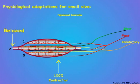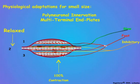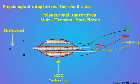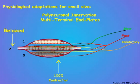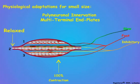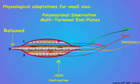Polyneuronal innervation of single muscle fibers and multi-terminal end plates over the surface of the muscle fiber are adaptations to small size that allow small arthropod animals such as insects to compensate for having fewer muscle fibers than are found in the larger vertebrate muscles. In this way, arthropods minimize the number of neurons needed to innervate the muscles while preserving the range of graded and fast contractions that are essential for normal movements and activity.